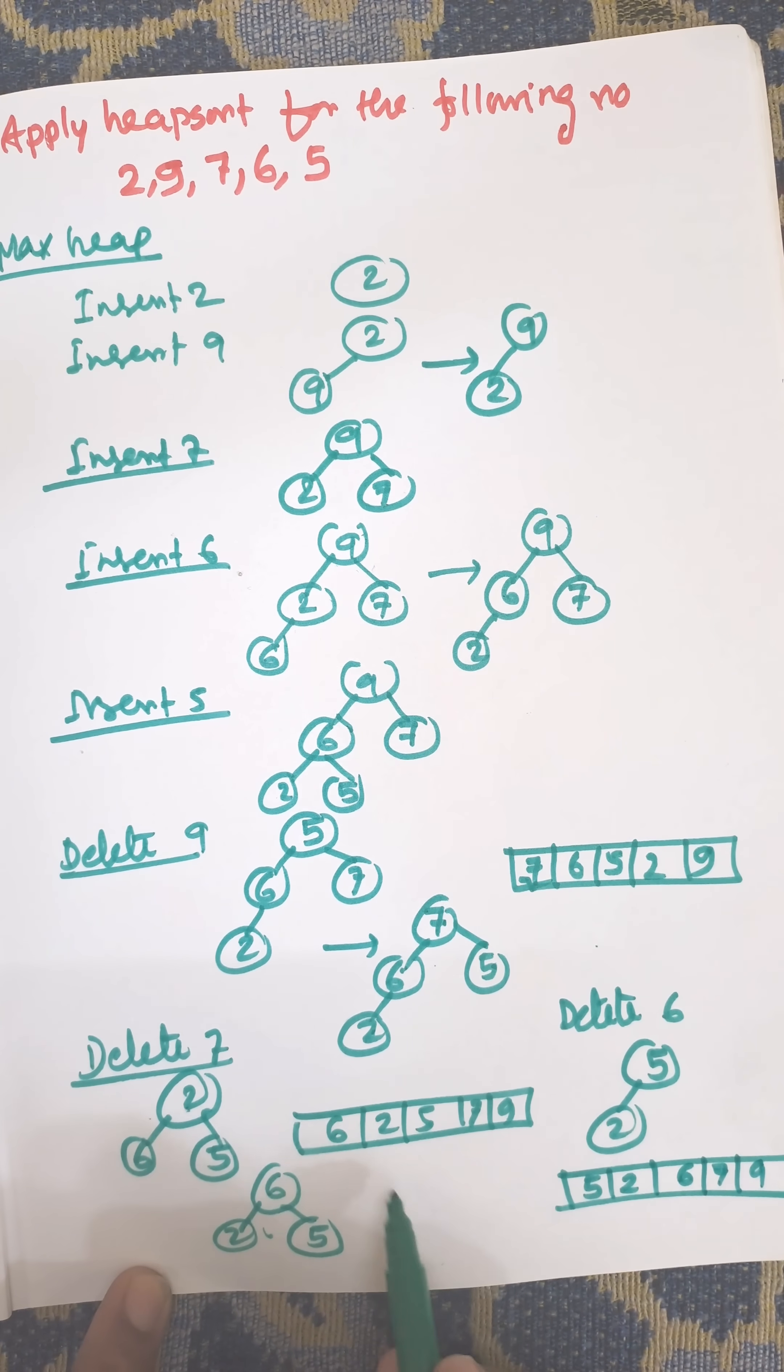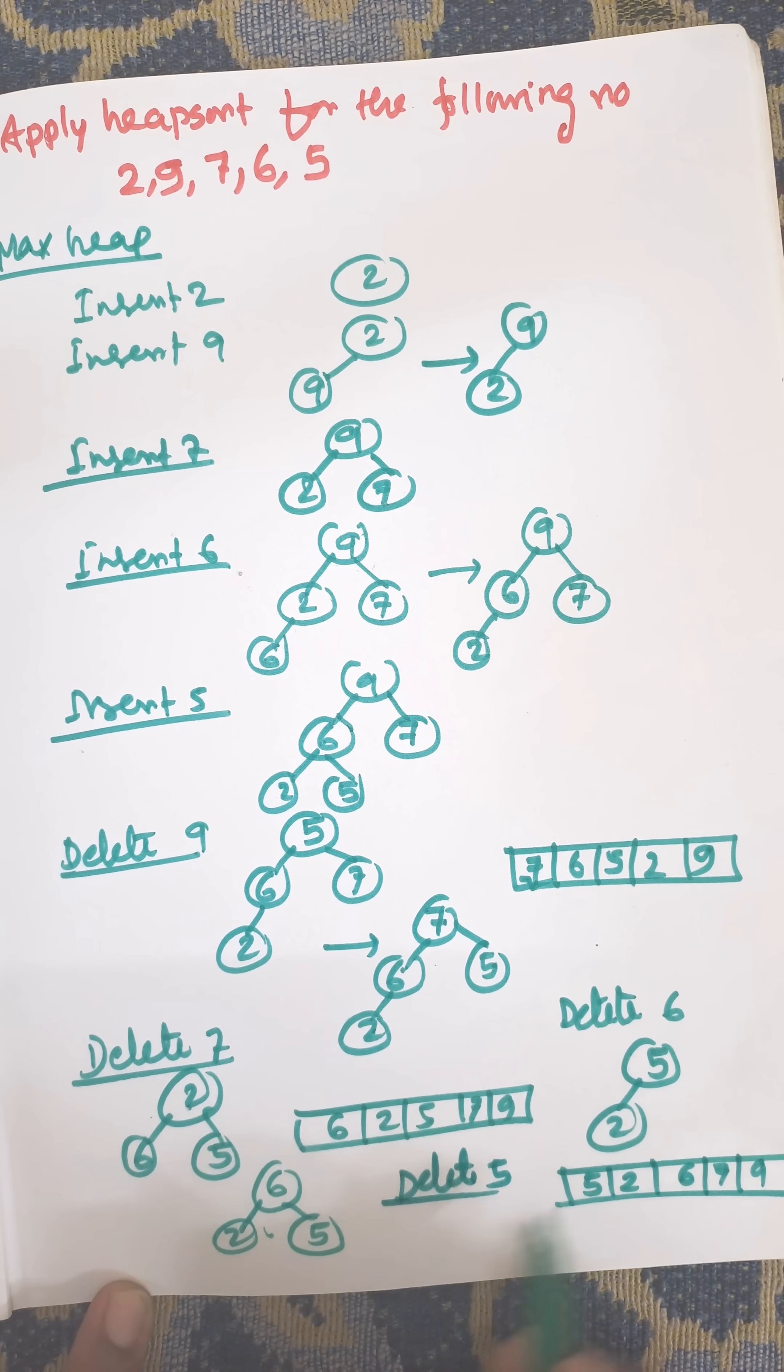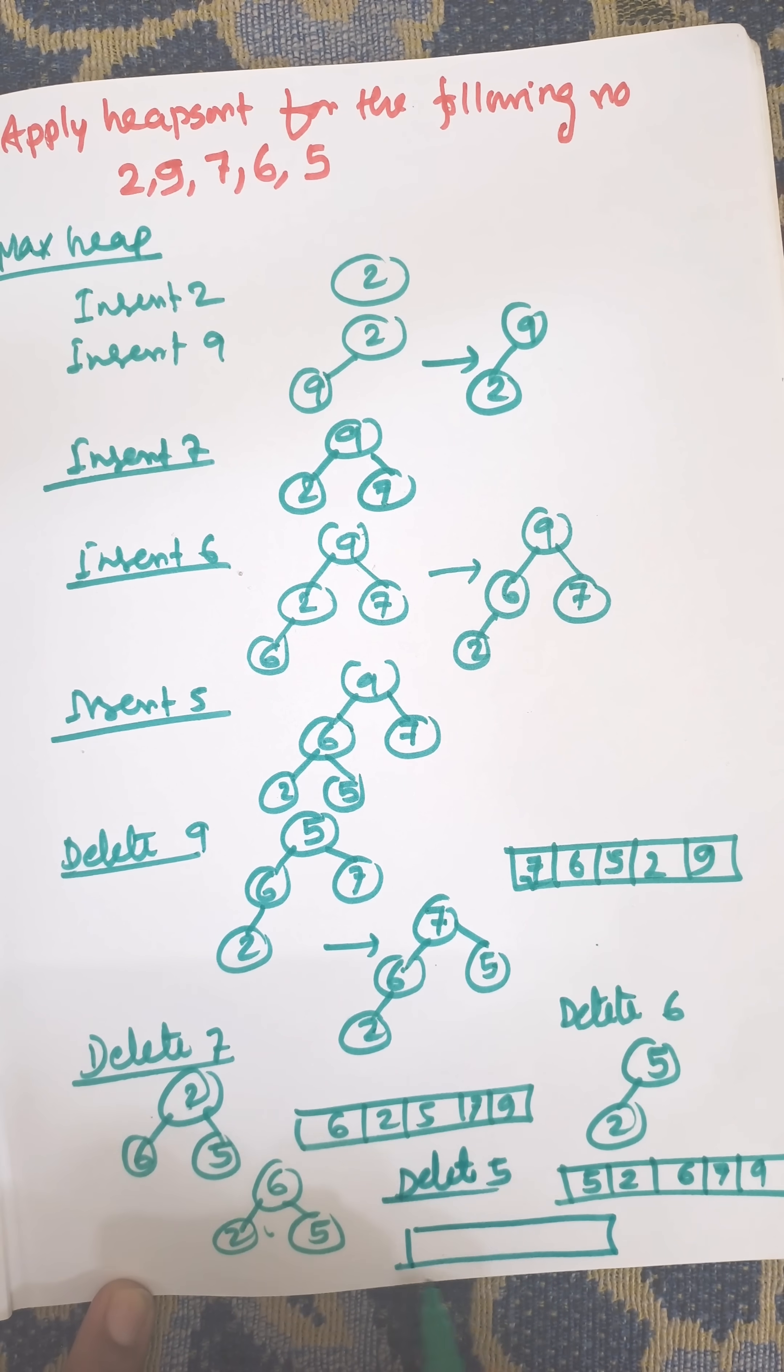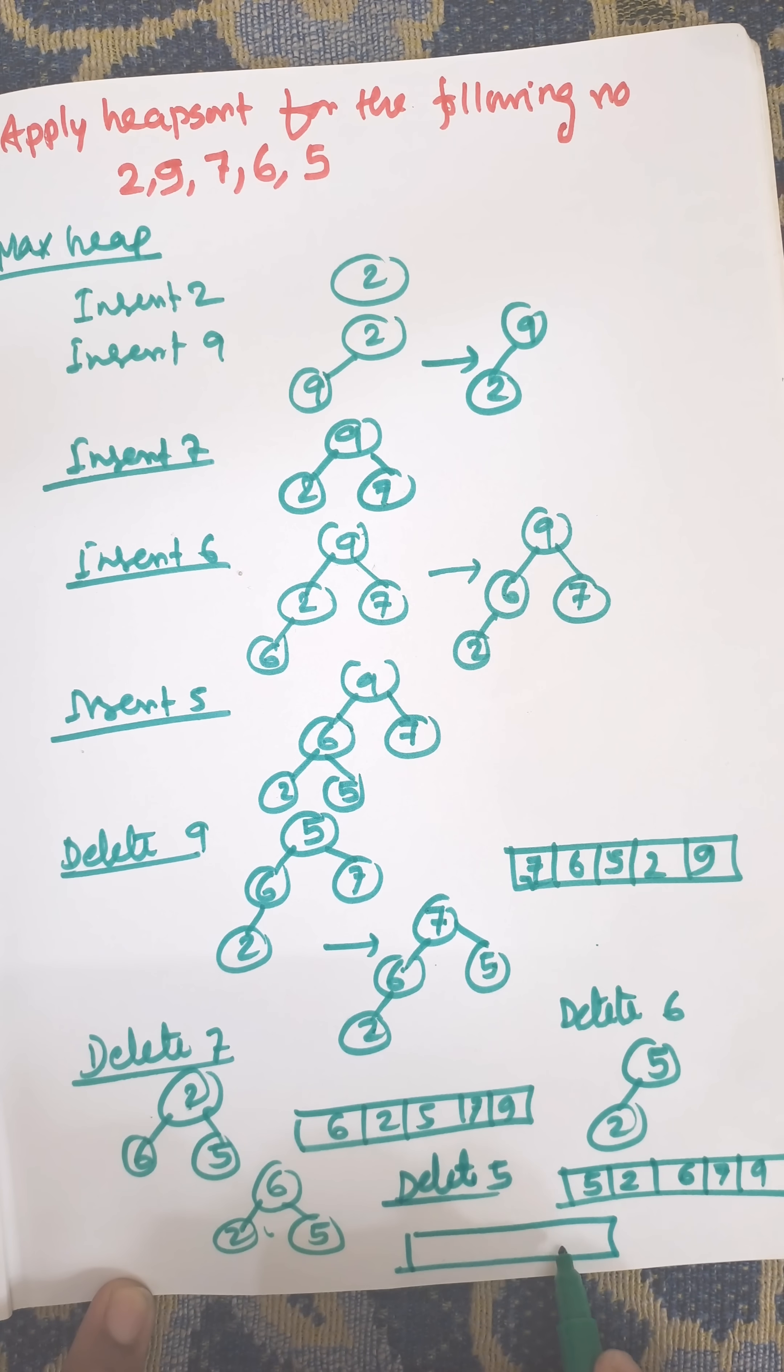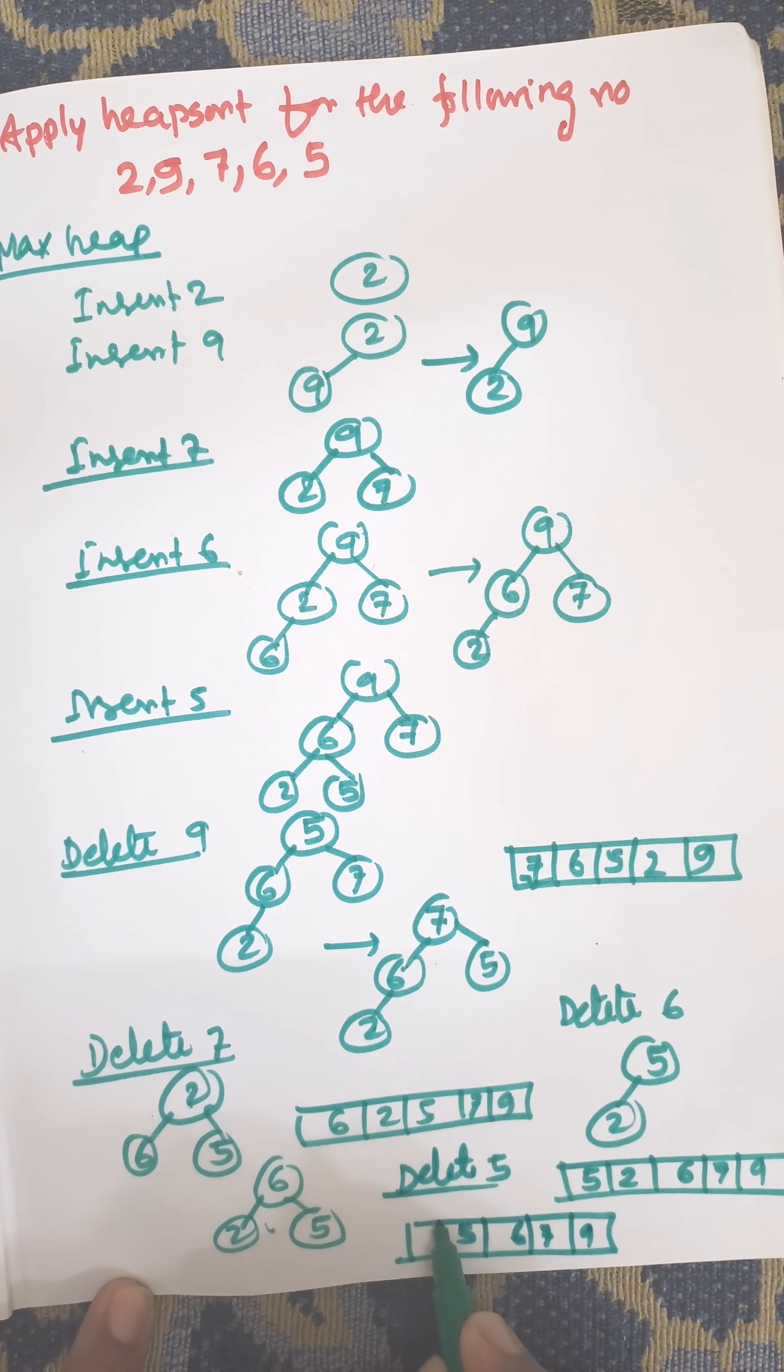Now last delete is, now delete 5. When you delete 5, then 2 will be the node. That is 9, 7, 6, 5, and the last node is 2.